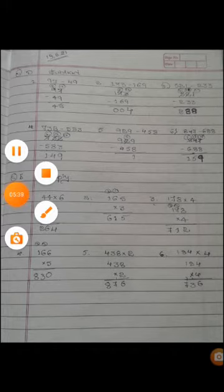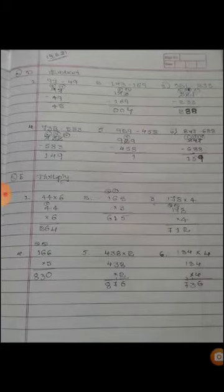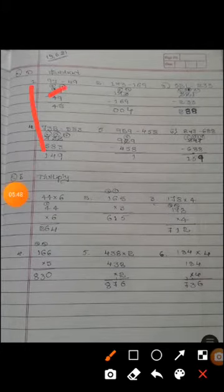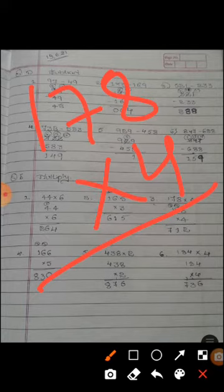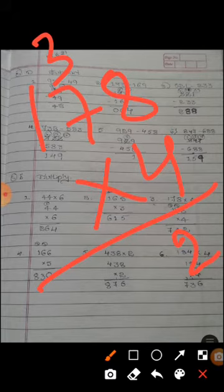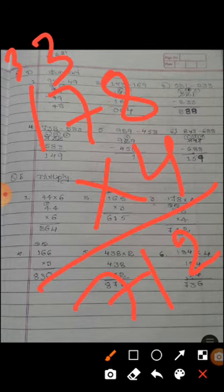Next, third one, 178 it can be multiplied by 4. 8 fours are 32. 7 fours are 28, 30, 31. 4 ones are 4 plus 3. 712 is the answer.